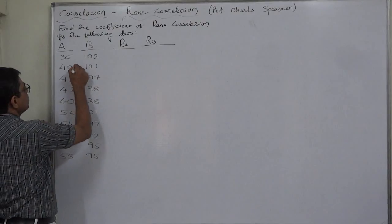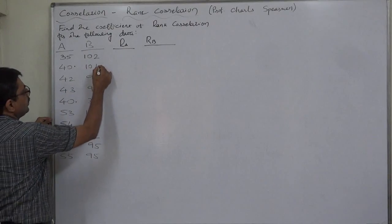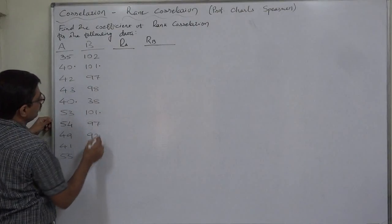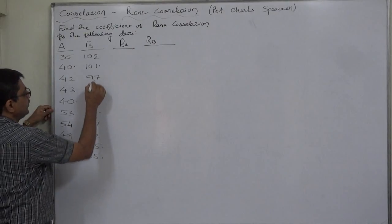See, 40 is 2 times in case of A, 101 is 2 times in case of B, also 95, also 97.